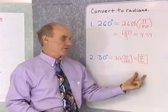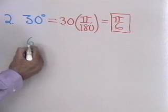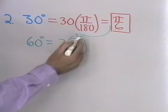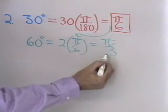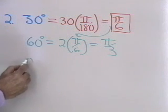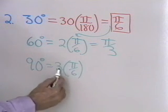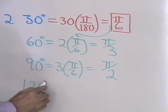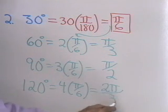We can use this one conversion to find others quickly. Since 60 degrees is twice 30 degrees, 60 degrees in radians is twice π over 6, which is π over 3. So 60 degrees and π over 3 are equivalent. Multiplying 30 degrees by 3 gives 90 degrees, and 3 times π over 6 gives π over 2. Multiplying by 4 gives 120 degrees, and 4 times π over 6 is 2π over 3.